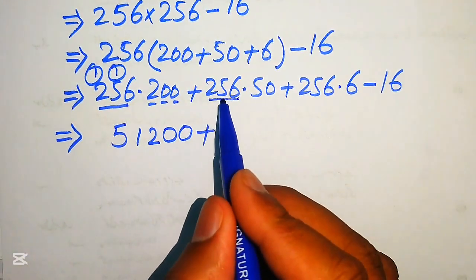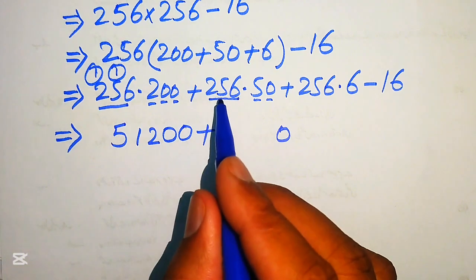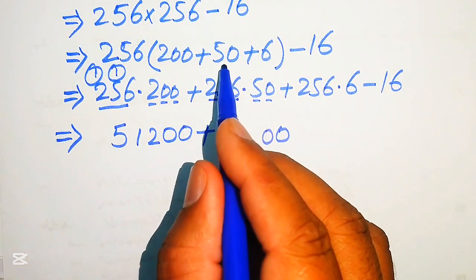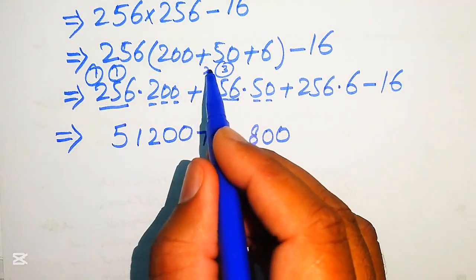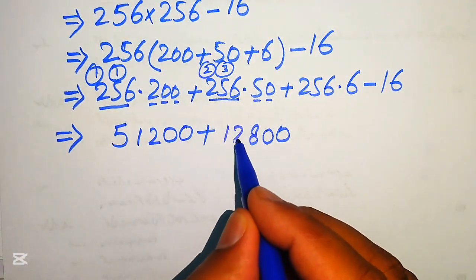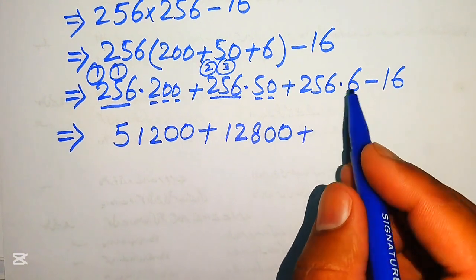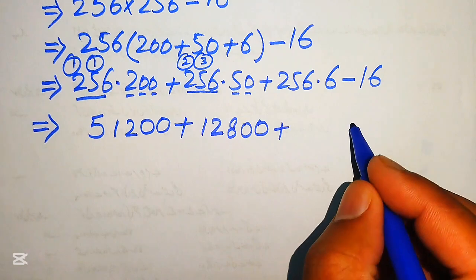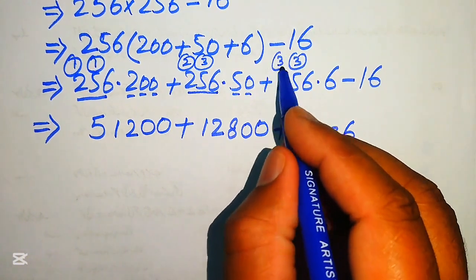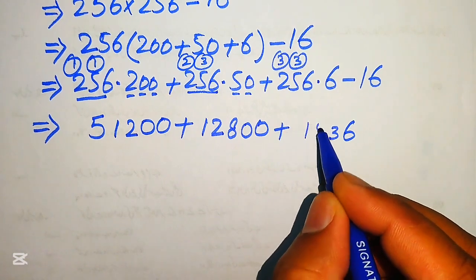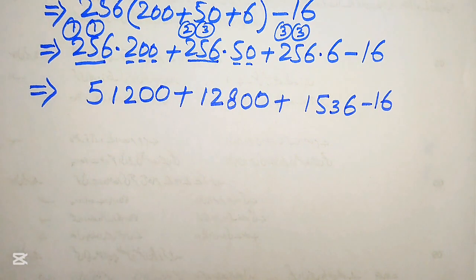For 256×50: multiplying 0 gives 0, then multiply 5 by 256 — 5×6=30, write 0 carry 3; 5×5=25, plus 3 is 28, write 8 carry 2; 5×2=10, plus 2 is 12. So 256×50 equals 12,800. For 256×6: 6×6=36, write 6 carry 3; 6×5=30, plus 3 is 33, write 3 carry 3; 6×2=12, plus 3 is 15. So 256×6 equals 1,536. We still have minus 16.